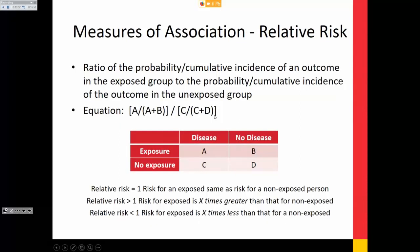Relative risk is the ratio of the probability or cumulative incidence of an outcome in the exposed divided by the probability in the unexposed. The denominator includes people who got the disease as well as those who didn't — that's different from odds, where you just divide by B, not A plus B. Relative risk also has directionality: equal to one means the same for exposed versus non-exposed; greater than one means greater risk for exposed; less than one means less risk.